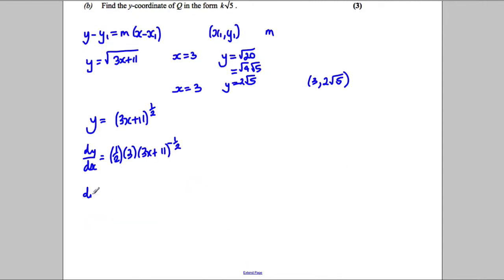So this would simplify to dy/dx, therefore would be the 3 stays on top, the 2 ends up on the bottom, and this square root also ends up on the bottom, 3x add 11. So that's our dy/dx, and what we want to do is work out dy/dx when x equals 3. So we substitute 3 into this equation, so it would be 3 divided by 2, the square root of, again, that would be 20.